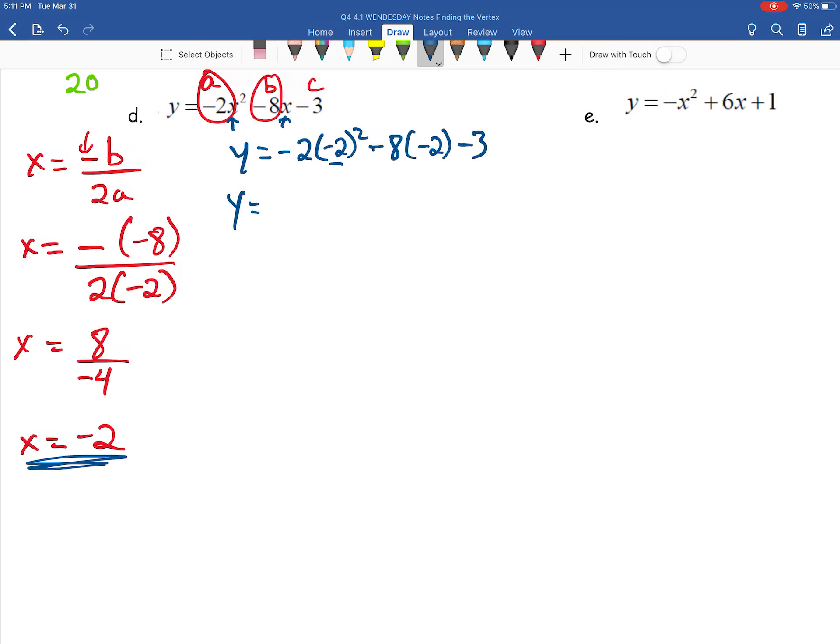And then simplifying this up, negative 2 squared comes out to be regular 4. And then negative 2 times 4 comes out to be negative 8. Negative 8 times negative 2 gives us regular 16. And then minus 3. And then lastly, just combining these all together, we should get 5.